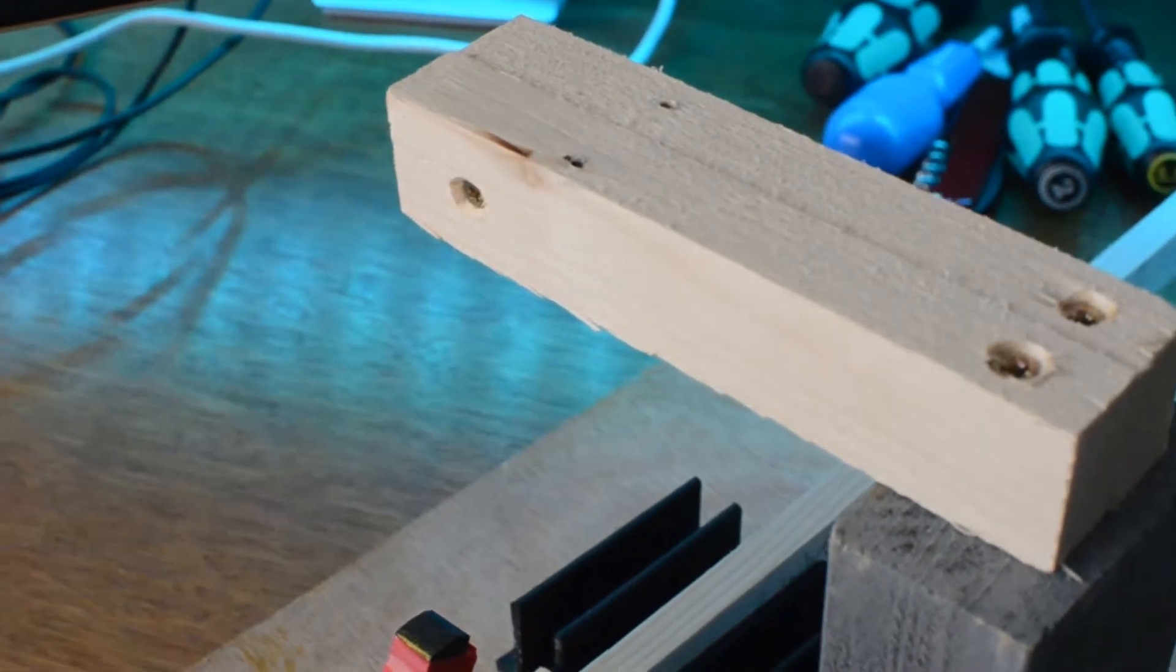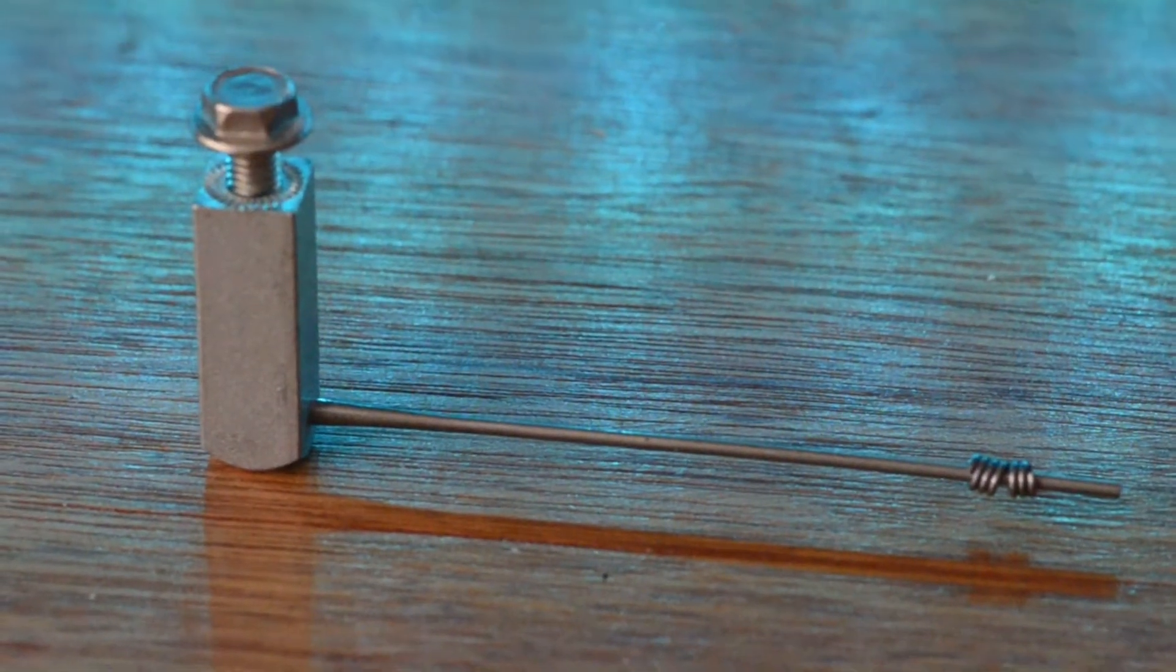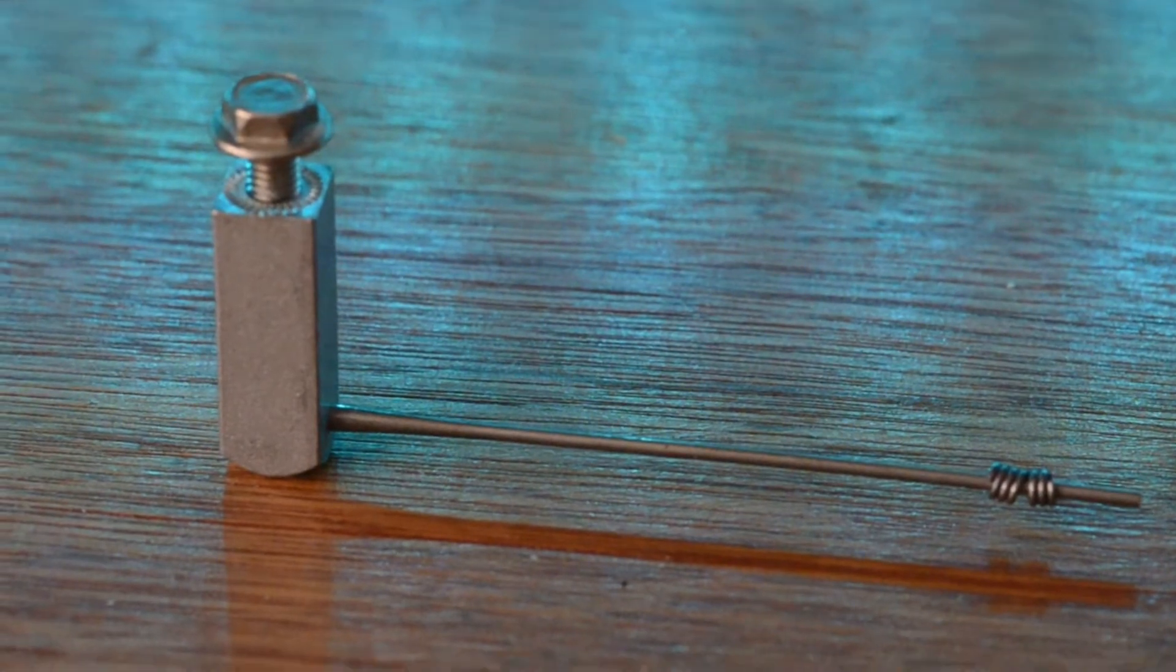This is a tone generator assembly from a Fender Rhodes. It consists of a tine and this is a swaged steel cantilever steel rod.